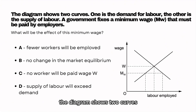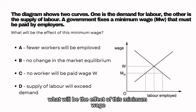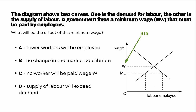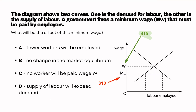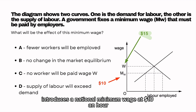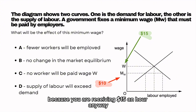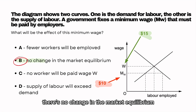The diagram shows two curves — one is the demand for labour, the other is the supply of labour. A government fixes a minimum wage that must be paid by employers. What will be the effect of this minimum wage? This is somewhat of a trick question. If $15 per hour is the current wage but the government introduces a national minimum wage at $10 an hour, this will make no difference because you are receiving $15 an hour anyway. So the answer is B — there is no change in the market equilibrium.